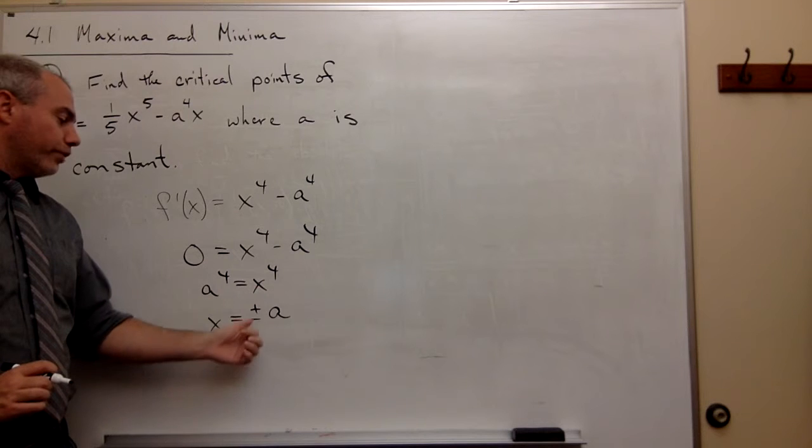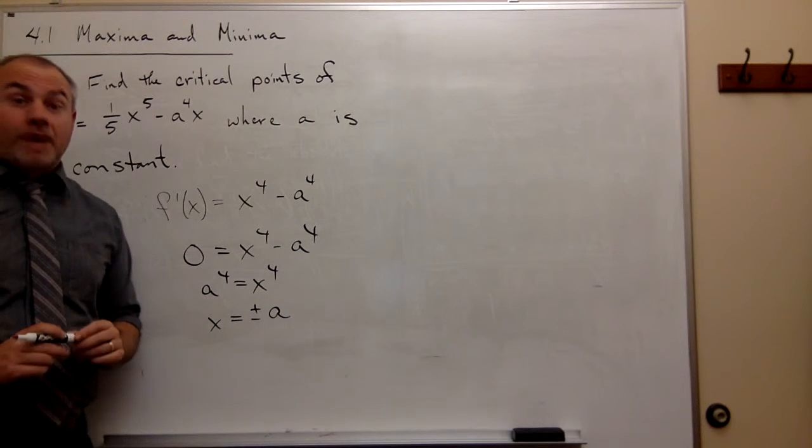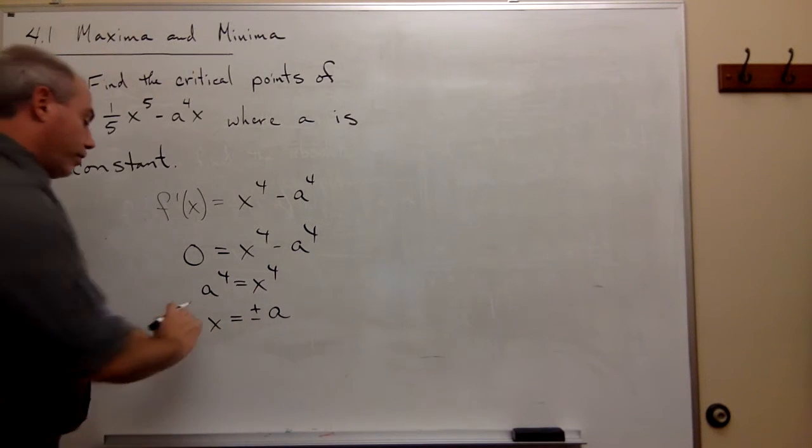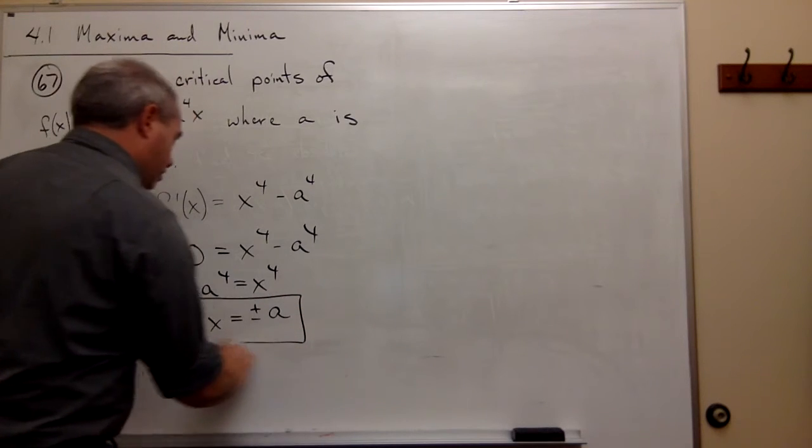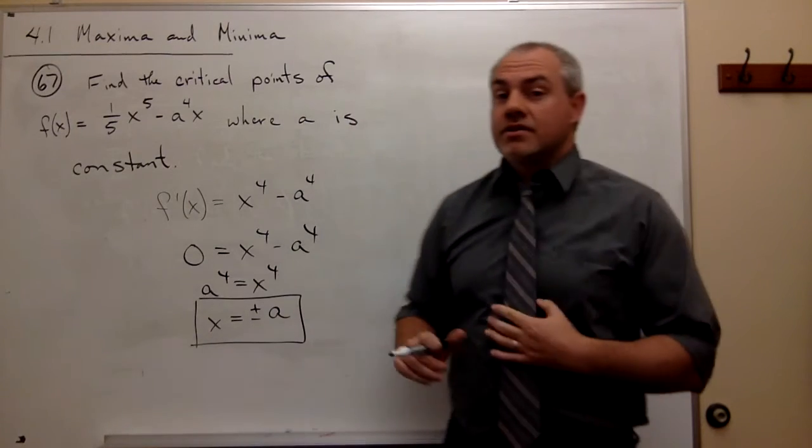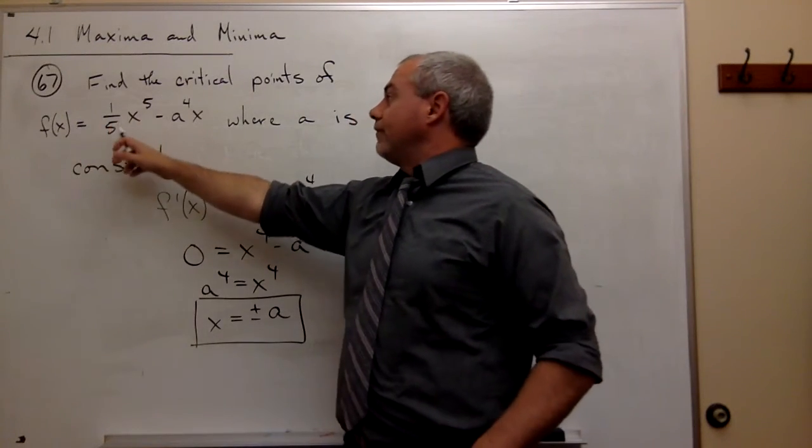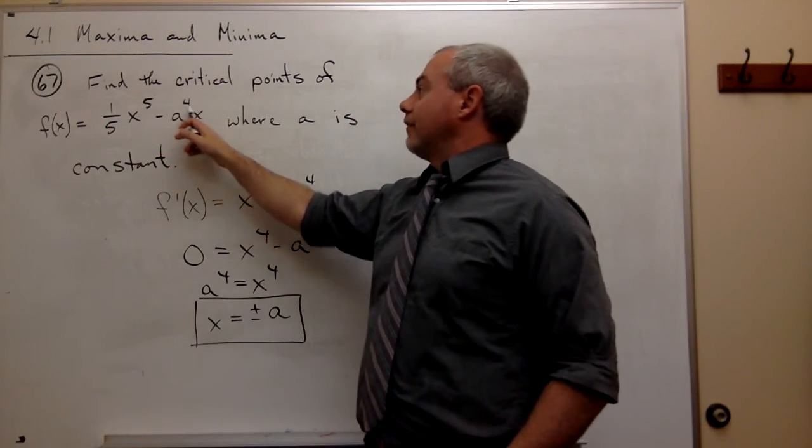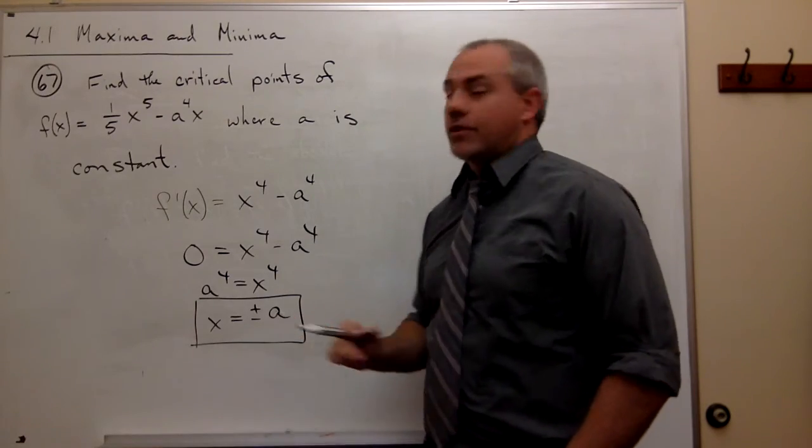So if we take a 4th root, we really are going to get a plus or a minus a, and those are going to be my two critical points. So the critical points of the function 1/5 x to the 5th minus a to the 4th x are just plus or minus a.